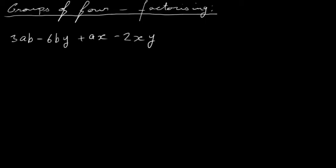In this video I'm going to look at more factorizing - specifically factorizing expressions with a group of four terms. So we have one, two, three, four terms in this particular expression. It's similar to the common factor method used in a previous video. What we do here is take them in pairs - factorize the first two using the common factor method, then do exactly the same with the last two.